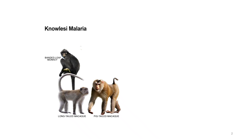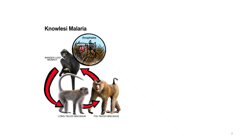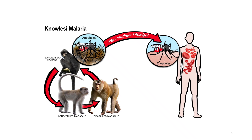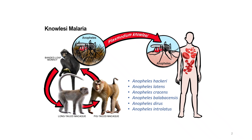Plasmodium knowlesi is a malaria parasite found naturally in banded leaf macaques, long-tail and pig-tail macaques in the tropical forests of Malaysia and elsewhere in Southeast Asia. The life cycle continues in the monkeys through Anopheles mosquitoes, and humans become infected when these mosquitoes bite them. Several mosquito species belonging to the Leucosphyrus group have been incriminated as vectors for knowlesi malaria, as listed here.